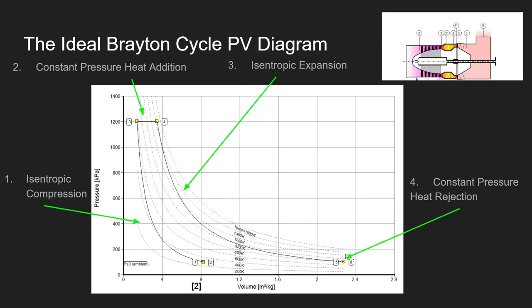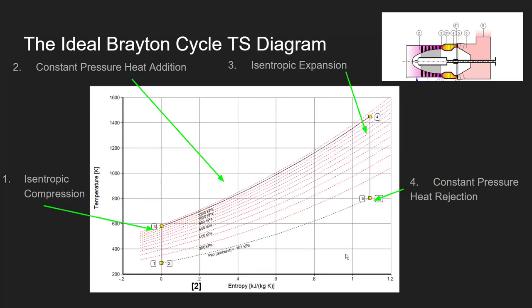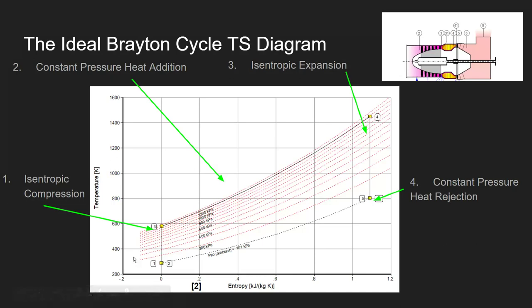We can also show the Brayton cycle on what's called the temperature-entropy, or TS, diagram. The TS diagram is a great way of visualizing not only the temperatures in our system but also the inefficiencies, because it shows the entropy. Again, we move from point two to point three via an isentropic compression process, which is a vertical line. We move across lines of constant pressure, and we can see that the temperature is increasing, as shown by the ideal gas relationship.